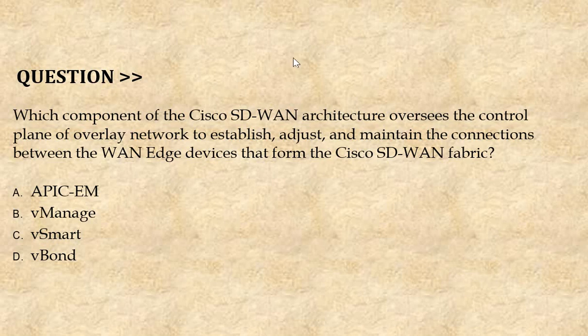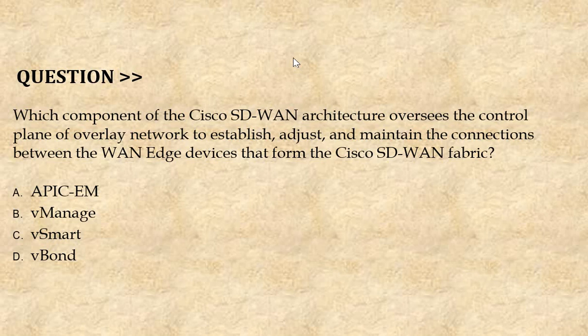Our next question is: which component of the Cisco SD-WAN architecture oversees the control plane of the overlay network to establish, adjust, and maintain the connections between the WAN edge devices that form the Cisco SD-WAN fabric? Option A: APIC-EM. Option B: VManage. Option C: VSmart. Option D: VBond. The correct answer is Option C.